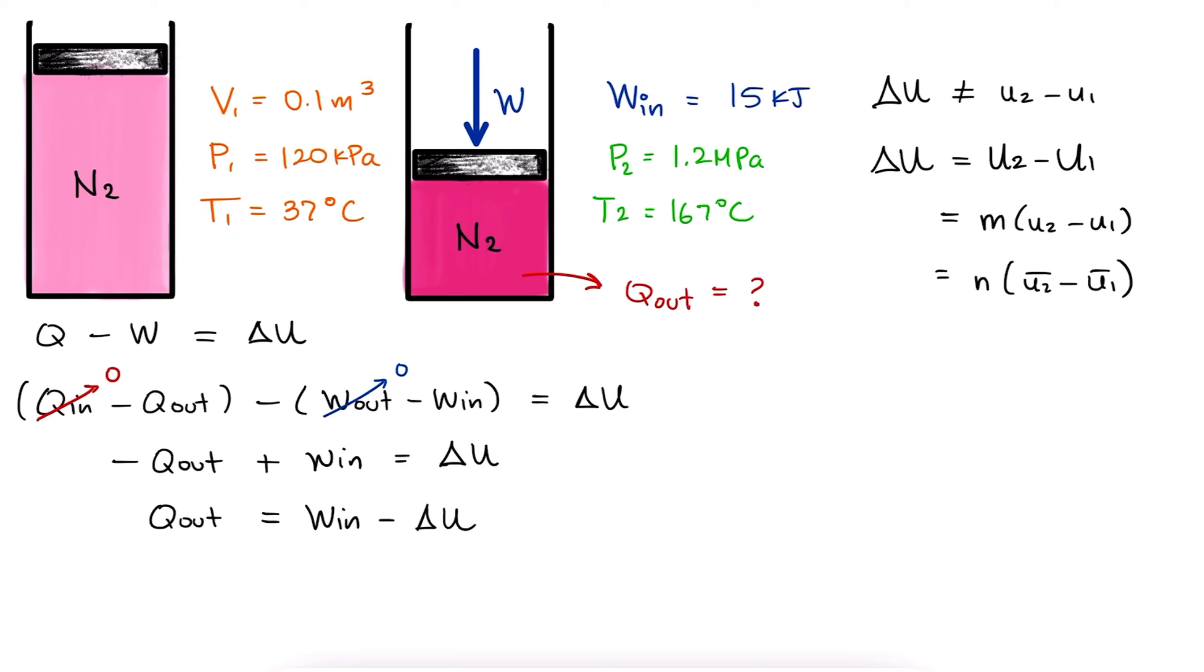Assuming nitrogen to be an ideal gas, and everything we've learned about specific heats is for ideal gas only anyways, we see that from PV equal to MRT, M is equal to P1V1 over RT1. But do we need the mass or do we need the number of moles? Well this depends on the type of information we're going to get for the internal energy at states 1 and 2.